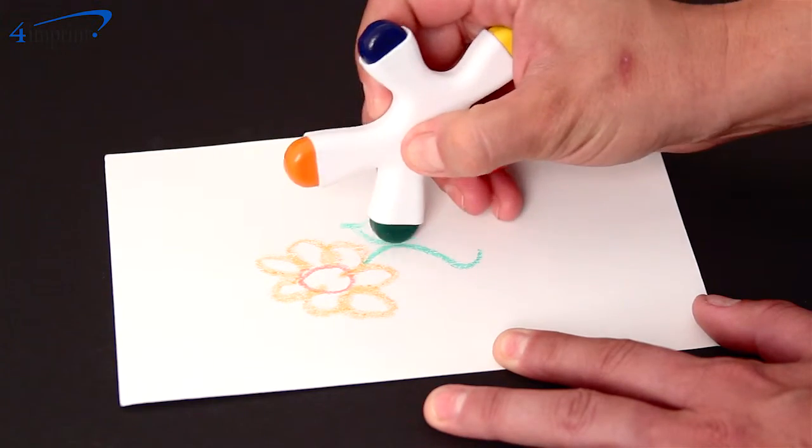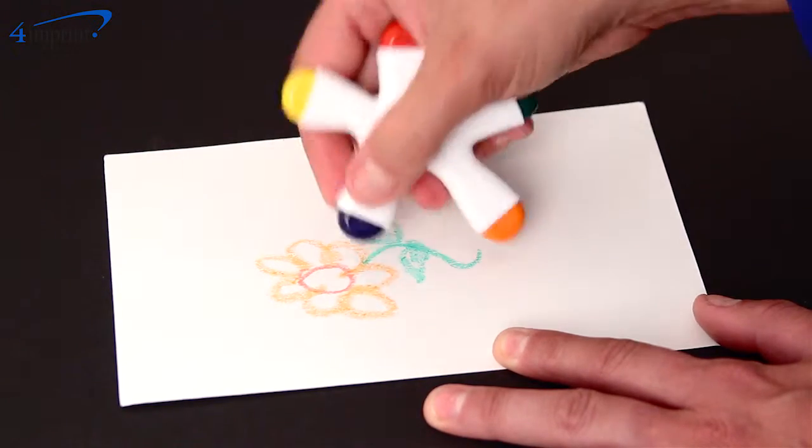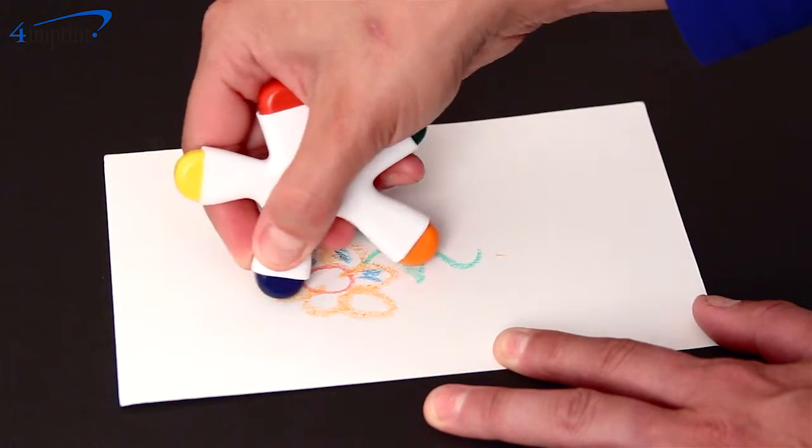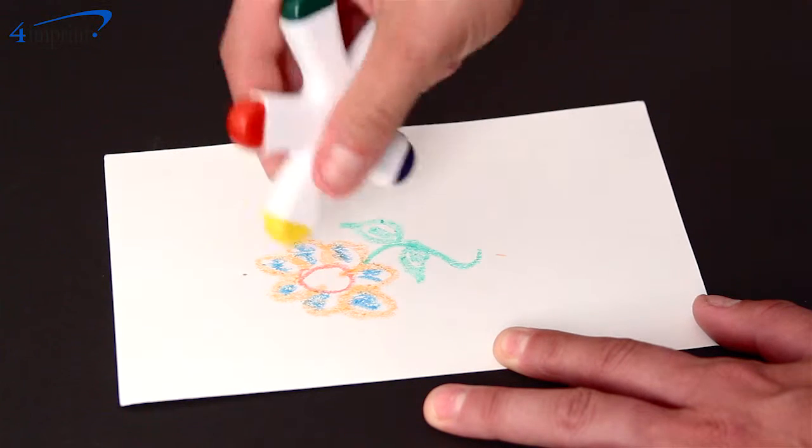This item includes five rounded crayon colors including green, yellow, red, orange, and blue, which will allow you to create a variety of colorful drawings.